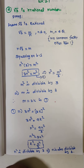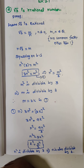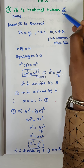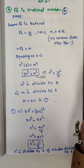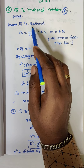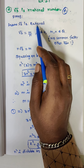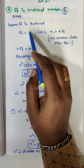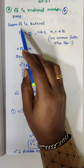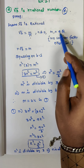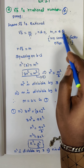Hi students, this is Dinesh. We are going to discuss exercise 2.1, question number 2: root 3 is an irrational number. This is a very important problem. First, assume root 3 is rational. Rational means root 3 is equal to m by n, where n is not equal to 0 and m, n belong to the rationals.